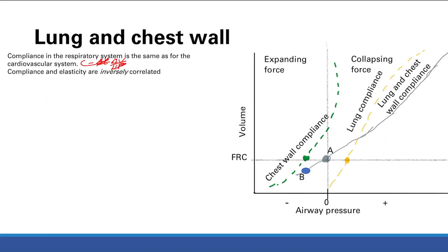Compliance is just a measure of how stretchy something is — how distensible the lung is. The more compliant, the more distensible the lung is. Compliance and elasticity are inversely correlated. The more elastic something is, the less distensible. Think about a thick rubber band: the more thick tissue there is, the harder it is to stretch, the less distensible, the more it snaps back.